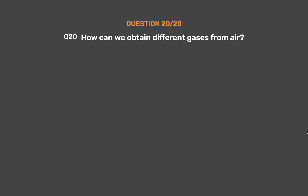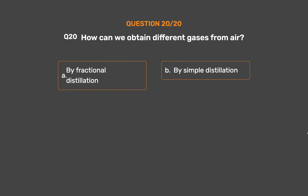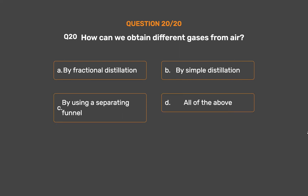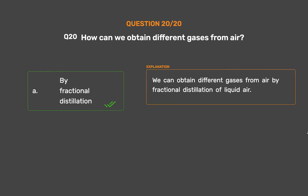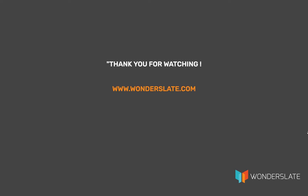Question number 20. How can we obtain different gases from air? Option A: By fractional distillation. Option B: By simple distillation. Option C: By using a separating funnel. Option D: All of the above. The correct answer is Option A: By fractional distillation. We can obtain different gases from air by fractional distillation of liquid air.